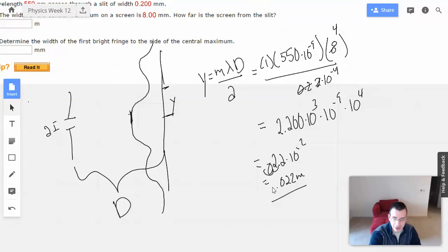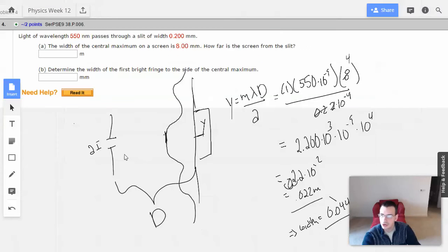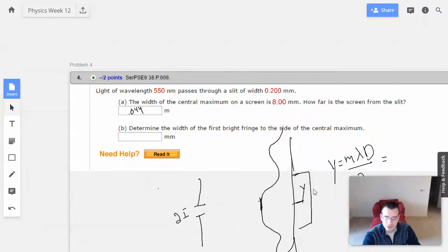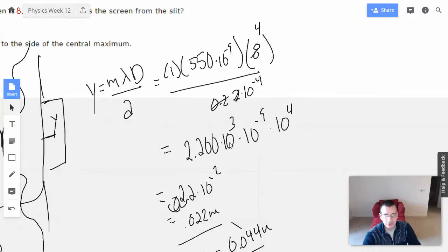That seems reasonable. That might even be right. Alright, so that's the distance to the first minimum. Now to double that, we're going to get, implies width equals 0.044 meters. Alright, make sure I didn't do anything crazy and stupid first.